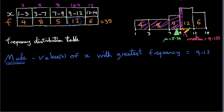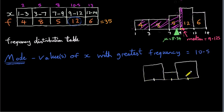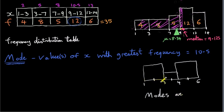When talking about the mode, we don't normally write down an interval — we take the mid-interval value. The middle of the interval 9 to 12 is 10.5, so the modal value of this histogram is x = 10.5. It's also possible to have a histogram with two modal values. For example, a histogram with three intervals — say 1 to 3, 3 to 4, and 4 to 6 — could have two modes: the mid-interval values 2 and 5.